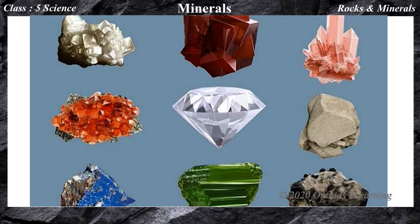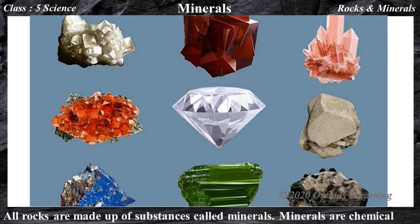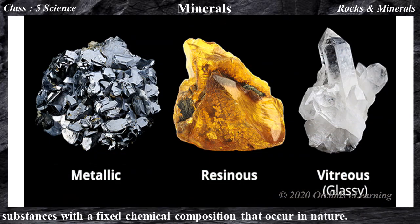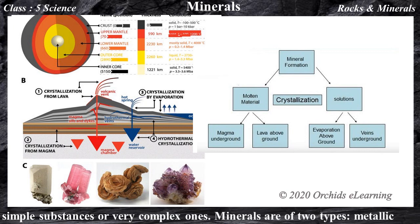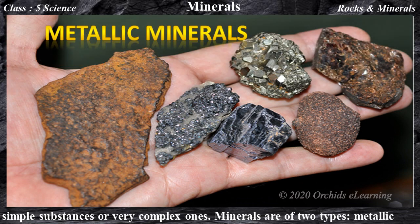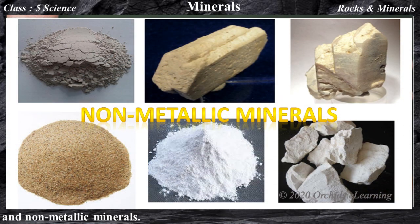Now, let us learn about minerals. All rocks are made up of substances called minerals. Minerals are chemical substances with a fixed chemical composition that occur in nature. They are formed by natural processes occurring within the earth. They may be simple substances or very complex ones. Minerals are of two types: metallic and non-metallic minerals.